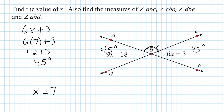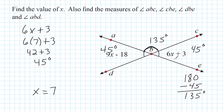To find the measure of ABC, we take 180 degrees and subtract 45, which gives us 135 degrees. So the measure of angle ABC is 135 degrees, which means the measure of angle DBE is also 135 degrees.